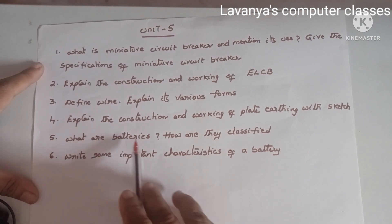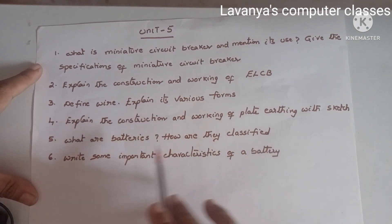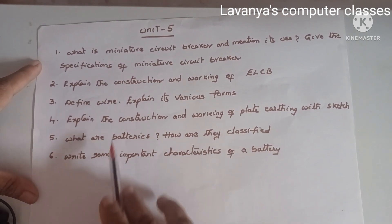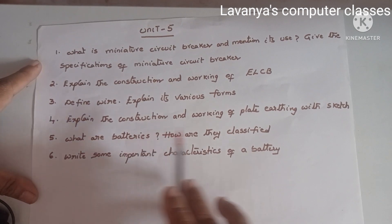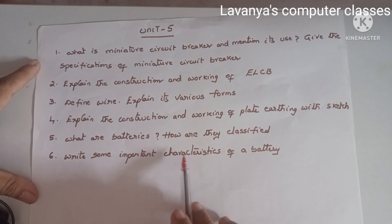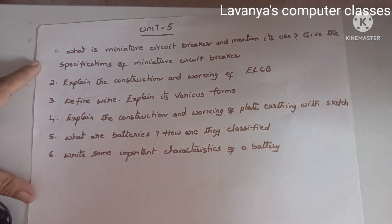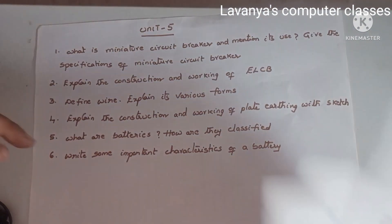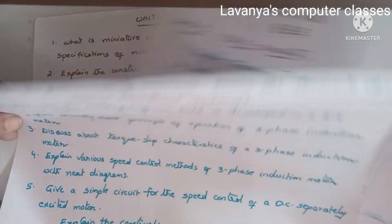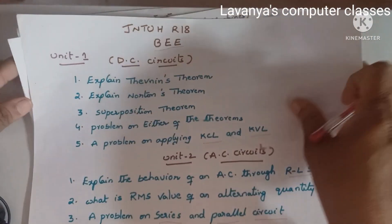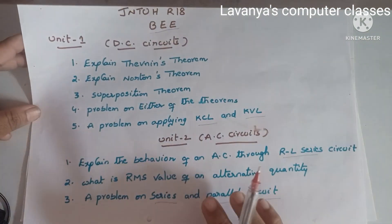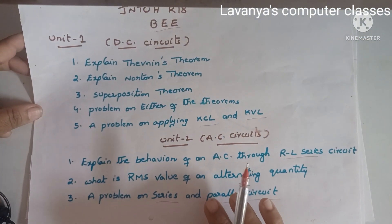What are batteries? How are they classified — what is a battery and what are the different types? Write some important characteristics of batteries. Everything comes into one question: what is battery, types of battery, and what are their characteristics? These are the very important questions in BEE. BEE is a problematic paper, so many problems are also coming. Read everything concept-wise; once the concept is clear, immediately go for problems.